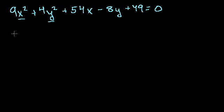Let's see. The x terms are 9x squared plus 54x, right? That's 9x squared plus 54x.